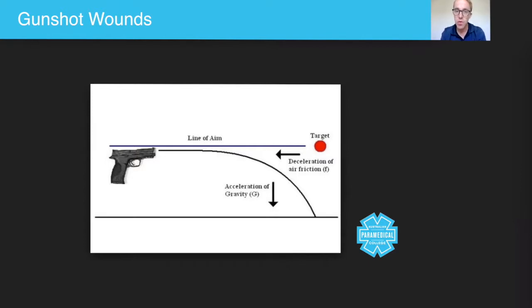As you can see on here, there are two scientific terms: the acceleration of gravity, so gravity is trying to pull the bullet down, and there's always going to be some deceleration due to air friction—in other words, quite a bit of resistance pushing the bullet backwards.